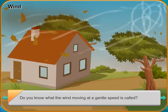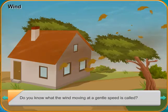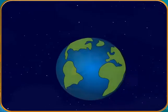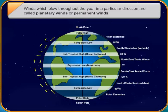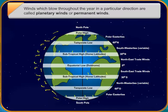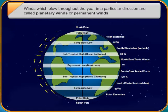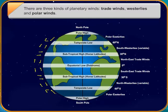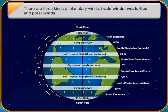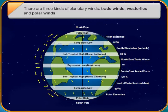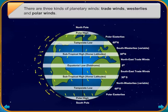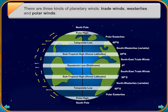Winds which blow in a westerly direction from the subtropical high pressure belts to the temperate low pressure belts are known as westerlies. They move from the south-west in the northern hemisphere and from the north-west in the southern hemisphere. Polar winds move from the polar high pressure belts to the temperate low pressure belts. They blow in the same direction as the trade winds and are also called the polar easterlies.